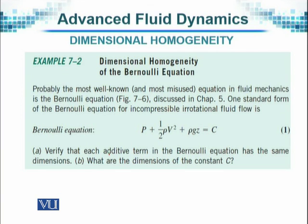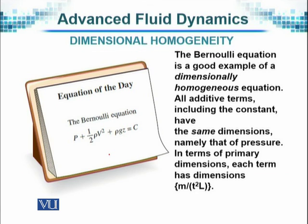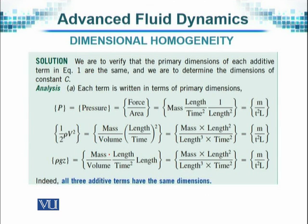If it is not so, we have a problem. The Bernoulli's equation is written as P plus half rho V squared plus rho GZ, and the dimensions of each term can be calculated, which are not very difficult.